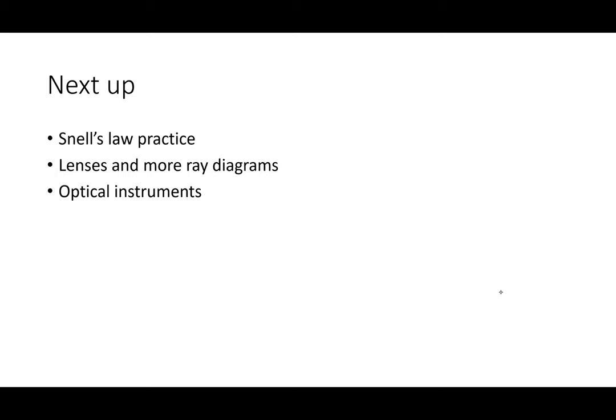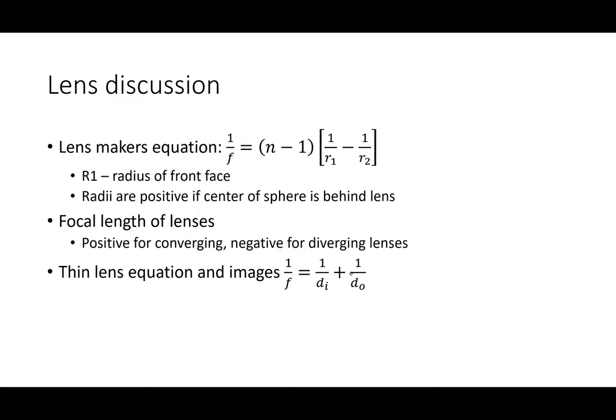By the end of today we'll have finished up what we need for geometric optics. One of the first equations we come up with for lenses is the lens maker's equation, which tells us the focal length of the lens depending on its shape. If we know the radius of curvature of the front and rear face and the index of refraction of the material, we can identify the focal length.